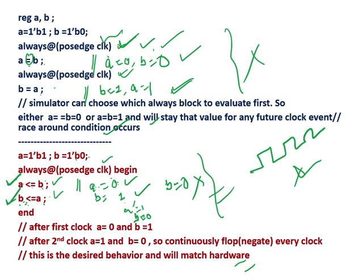So this non-blocking assignment gives the correct result matching real hardware behavior. Always remember: inside the always block, always use non-blocking assignment and not blocking assignment.